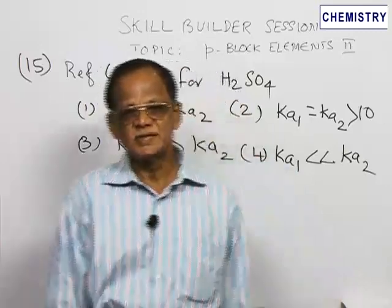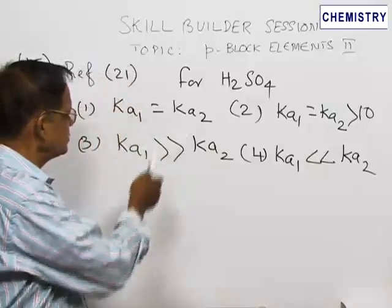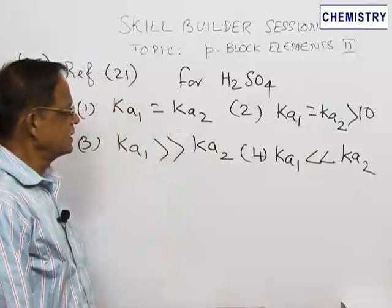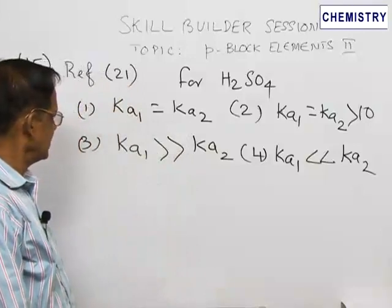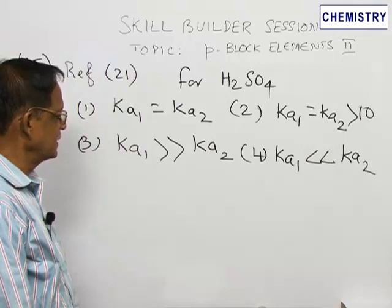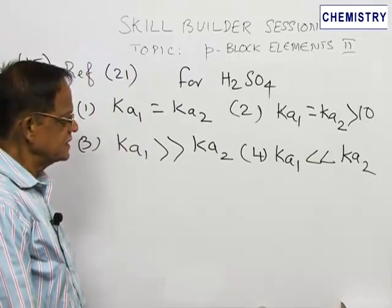You have got two dissociation constants. The question is whether Ka1 is equal to Ka2, or Ka1 is equal to Ka2 times 10, or Ka1 is far greater than Ka2, and the last one Ka1 is far less than Ka2.